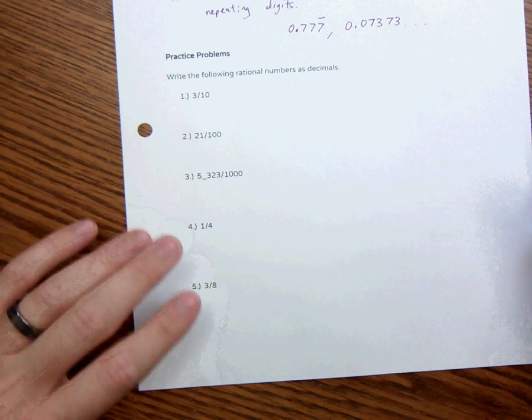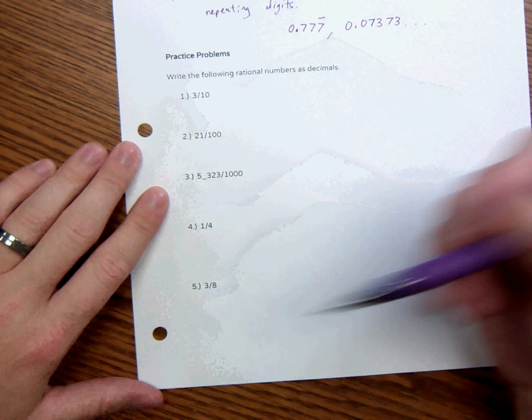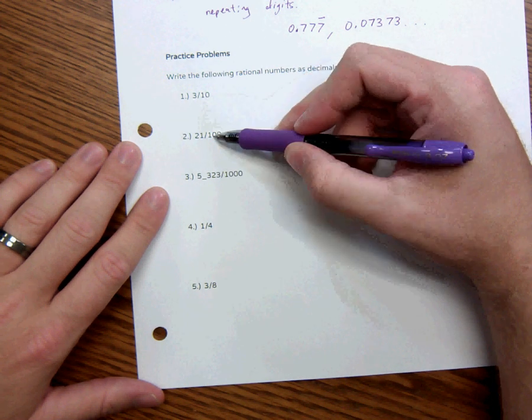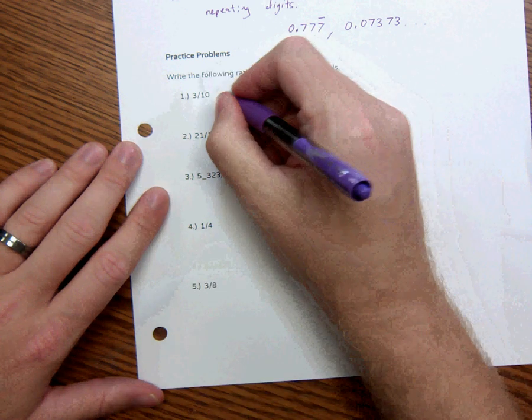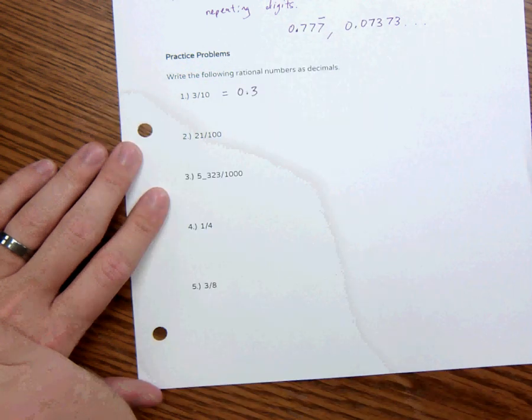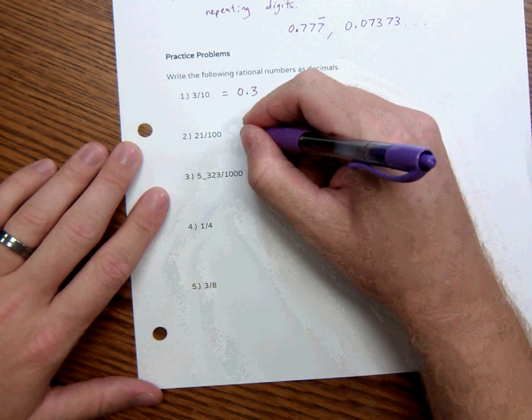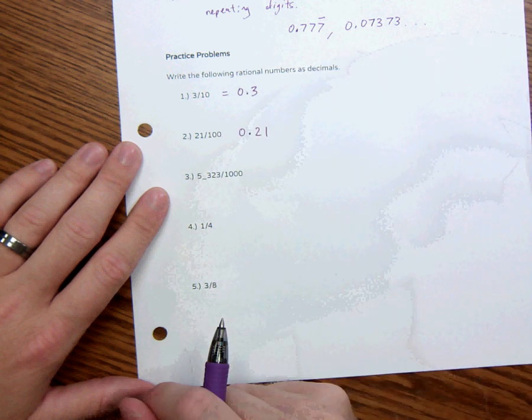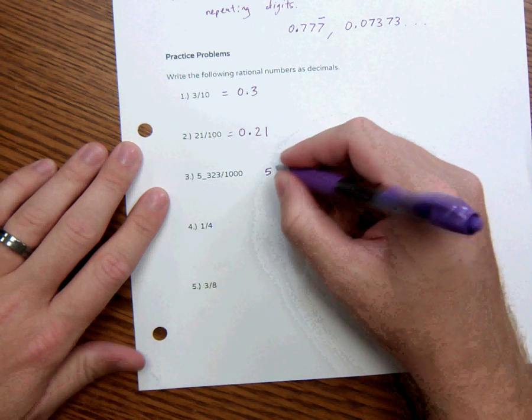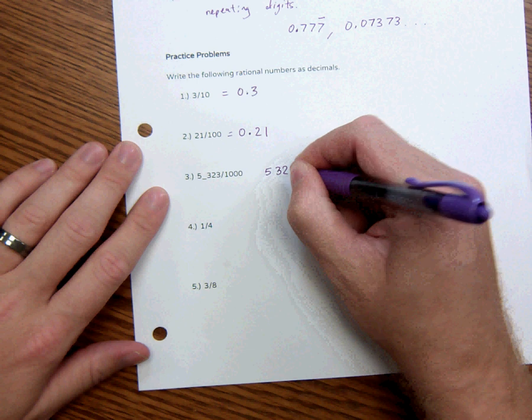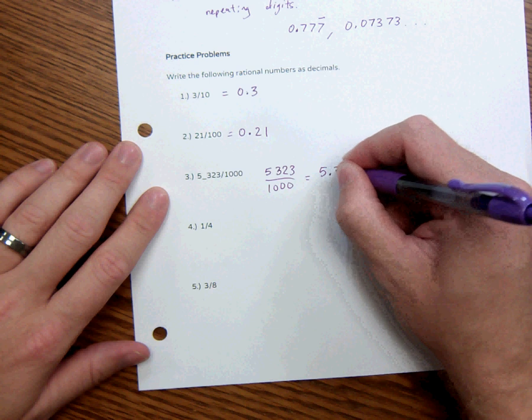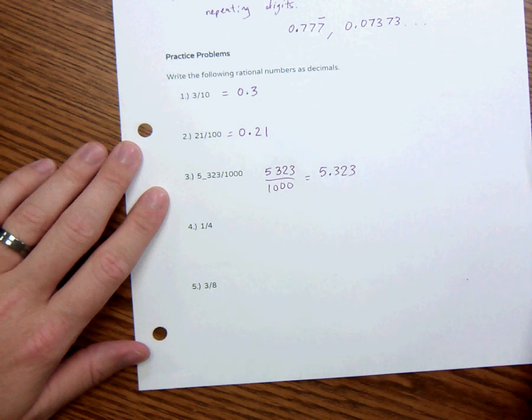So if we're going to write the following rational numbers as decimals, all of these are going to terminate. If it ends in a zero, it's actually really nice for us. 3 over 10 is just 3 tenths. 21 over 100 is just 21 hundredths. This right here, 5 and 323, that's like 5,323 over 1,000, and we can just write that as 5.323 thousandths. So those ones are pretty simple.